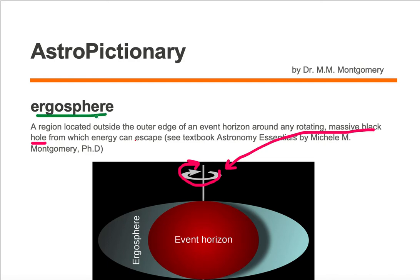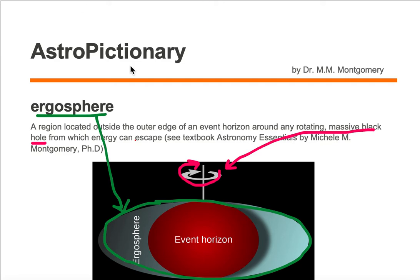The ergosphere is this gray region and it surrounds the event horizon. The event horizon is broken into an inner region and an outer region. A rotating black hole has an outer region to an event horizon, an inner region to an event horizon, and an ergosphere.